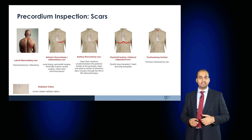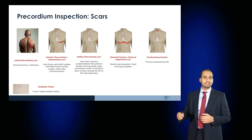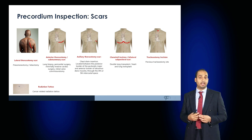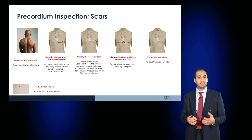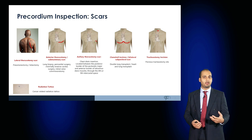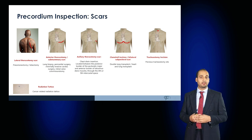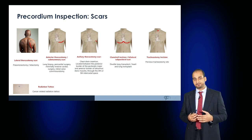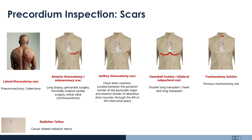Move on to inspect the precordium carefully looking for scars, both anteriorly and posteriorly. A lateral thoracotomy scar on the posterior thorax is used for pneumonectomies or lobectomies. Anteriorly there may be an anterior thoracotomy scar or a submammary scar, used for lung and cardiac surgery, lung biopsy, pericardial surgery, or minimally invasive cardiac surgery. Look in the axilla for auxiliary thoracotomy scars, used for chest drain insertions. A clamshell incision or bilateral subpectoral scar can be used in a double lung transplant or heart and lung transplant — if seen in a young patient along with a Hickman line, consider cystic fibrosis.